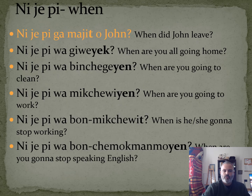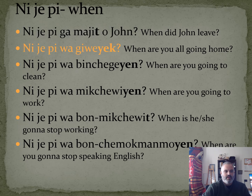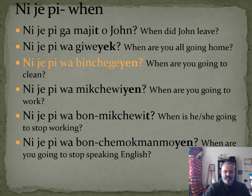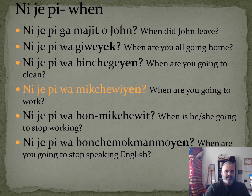Nije p means 'when.' Nije pija majit o John means 'when did John leave?' Nije piwa giwayak means 'when are you all going to go home?' Nije piwa bingegyan means 'when are you going to clean?' — binge gay is the verb 'to clean,' yin is 'you,' wa is the future. Nije piwa mikchoyin means 'when are you going to work?'